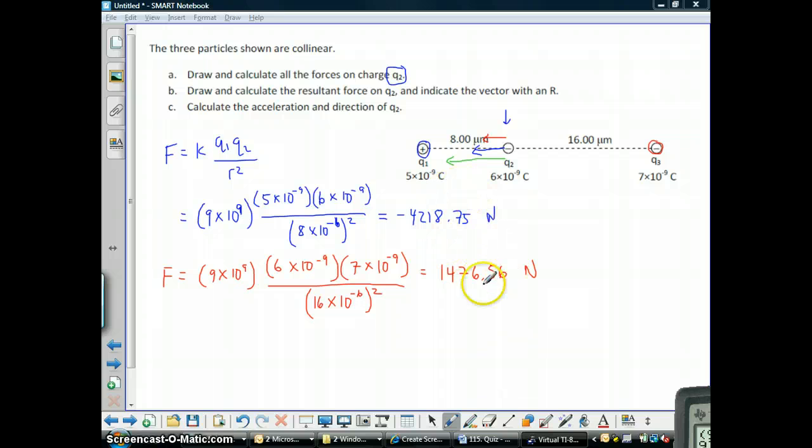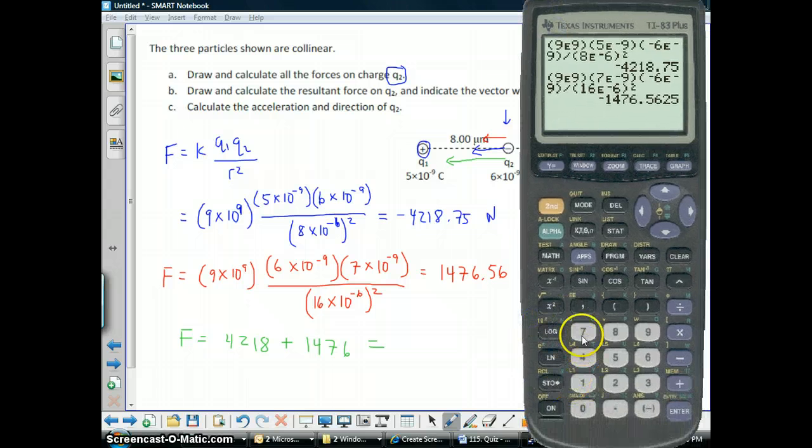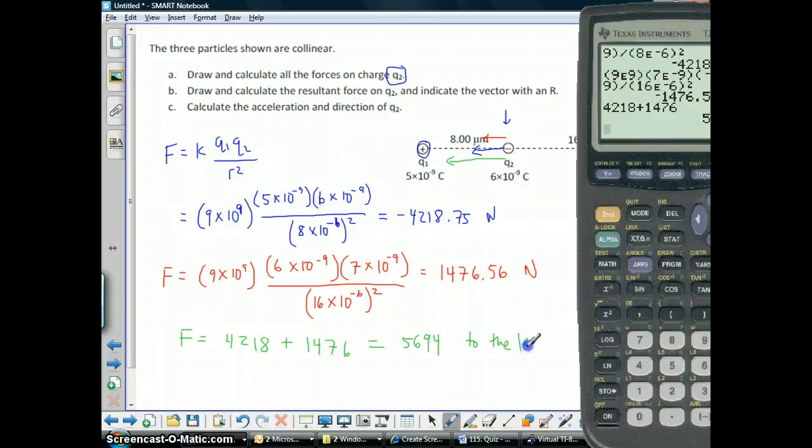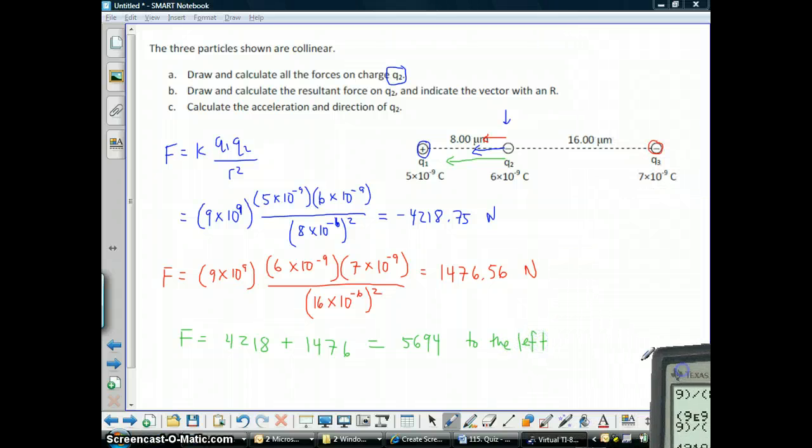So, now I found the force, the two forces that are pushing and pulling on Q2. The resultant force is just going to be the sum of those two. So, 4218 plus 1476. So, the total force pushing to the left. So, that takes care of A and B. Again, blue and red are adding up to give you green.